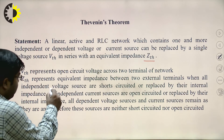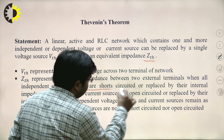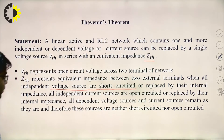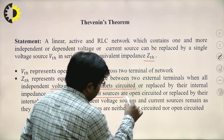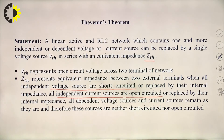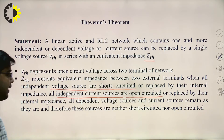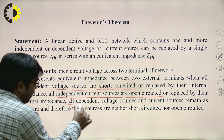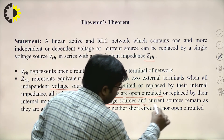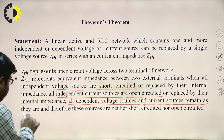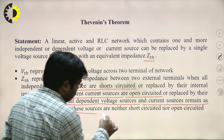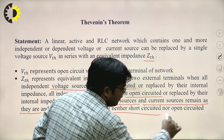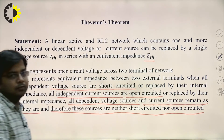When calculating Z_TH, independent voltage sources are replaced by short circuit and independent current sources are replaced by open circuit. If any circuit contains dependent voltage or current sources, all dependent sources remain in the circuit as they are — they are neither short circuited nor open circuited. This is an important point.